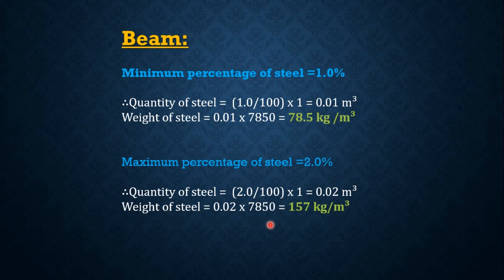The maximum percentage of steel required in a beam is 2%. Therefore, the quantity of steel equals 2 divided by 100 multiplied by 1, which equals 0.02 meter cube, and the weight of the steel equals 157 kg per meter cube. Alternatively, for 1%, we require 78.5 kg per meter cube; if you multiply this value by 2, you get the value for the maximum percentage of steel, which is 2%, giving 157 kg per meter cube.